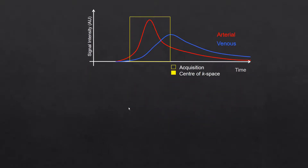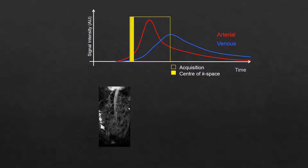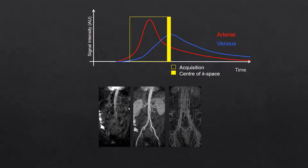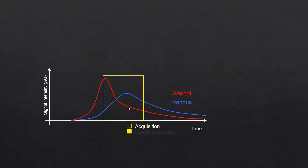In theory, these images could be obtained at the same sequence, starting at the same time, simply by choosing to fill k-space at either the beginning, middle, or end of the acquisition. In practice, the best method is usually to commence the sequence as close to the contrast peak as possible and immediately fill the center of k-space.